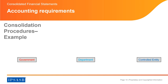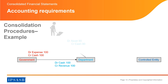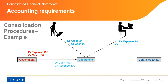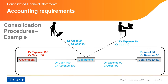Let's look at an example of consolidation procedures — government transfers. Government transfers 100 to a department: government debits expense 100 and credits cash 100; the department debits cash 100 and credits revenue 100. The department purchases an asset for 90 and pays salaries of 10, then transfers that purchased asset to a controlled entity. The controlled entity recognizes asset and revenue of 90. When consolidating, only transactions outside the economic entity are captured, and transactions between government, department, and controlled entity need to be eliminated.